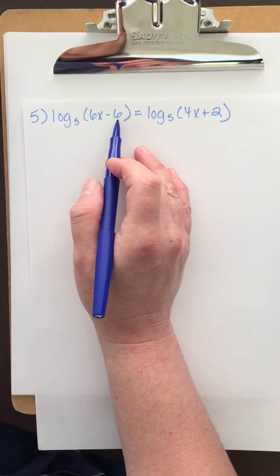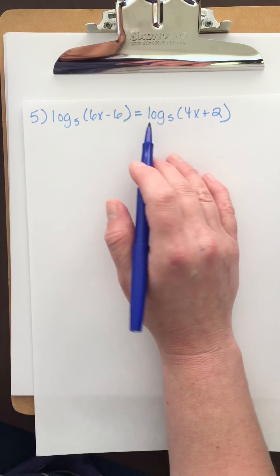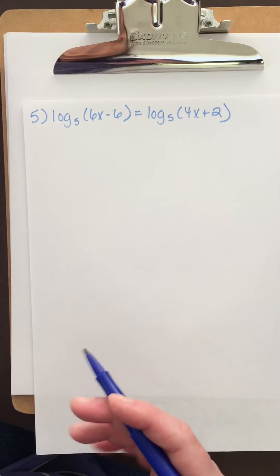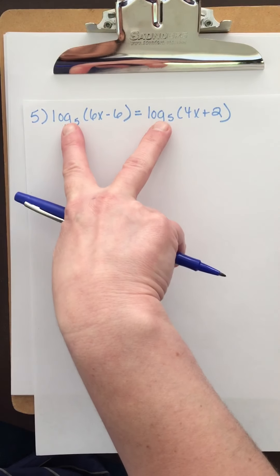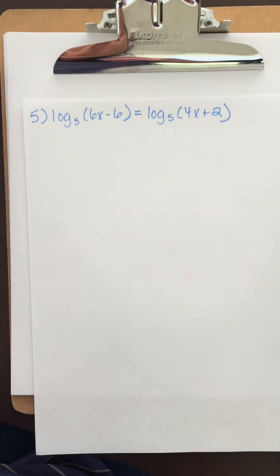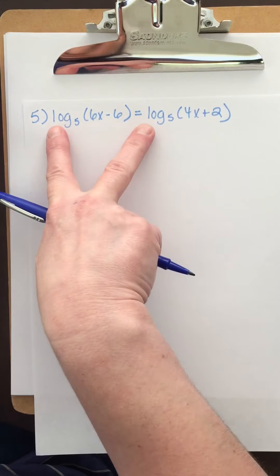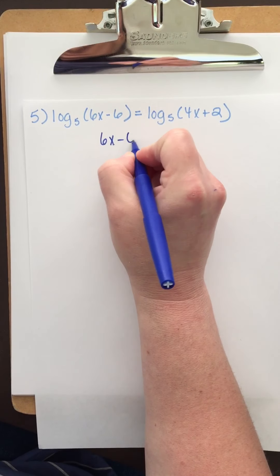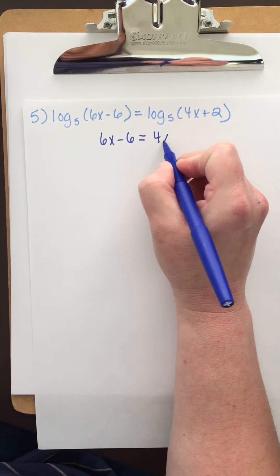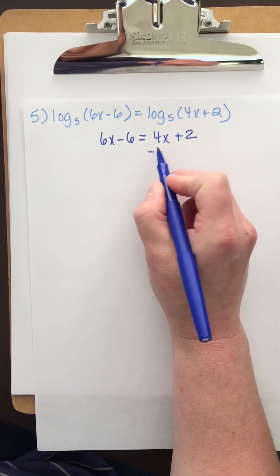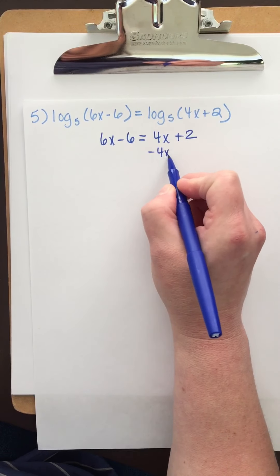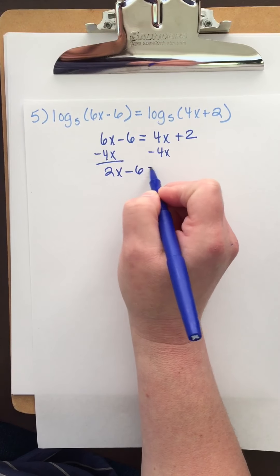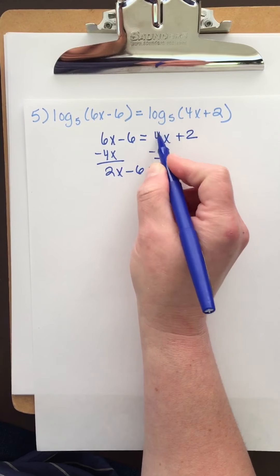We have log base 5 of 6x minus 6 equals log base 5 of 4x plus 2. This one is fantastic — both sides are log base 5 with coefficients of 1, so I can go straight to the one-to-one property. So 6x minus 6 must be equal to 4x plus 2. Subtract 4x from both sides. I get 2x minus 6 equals 2.